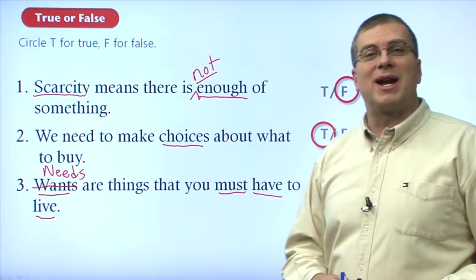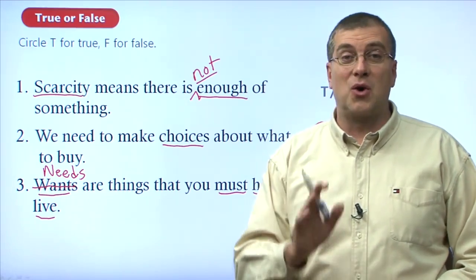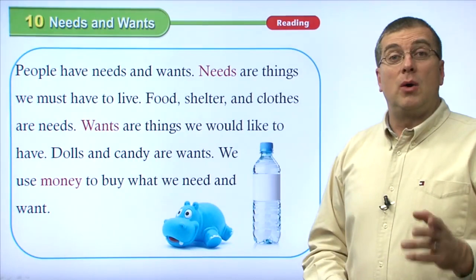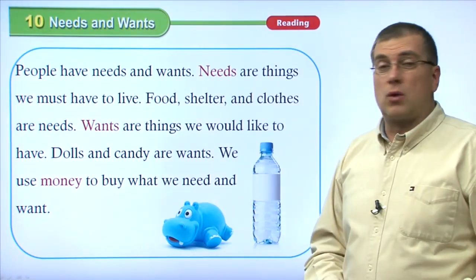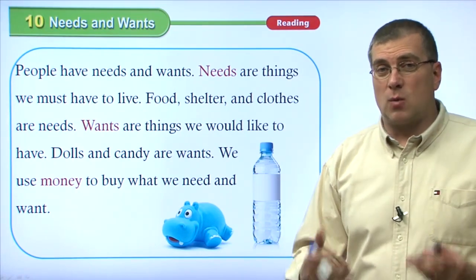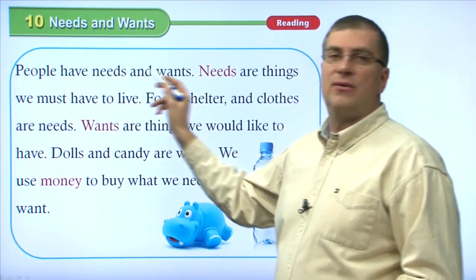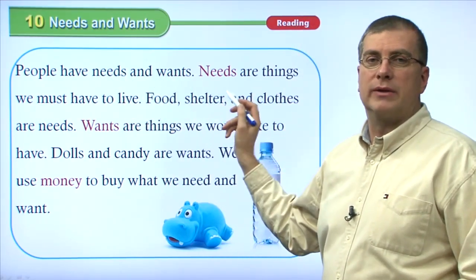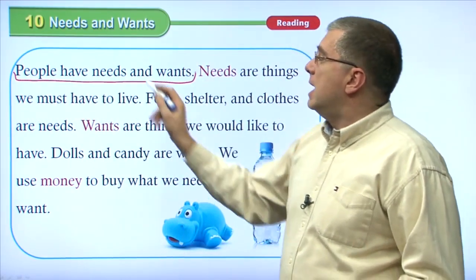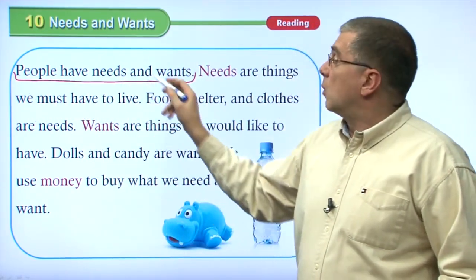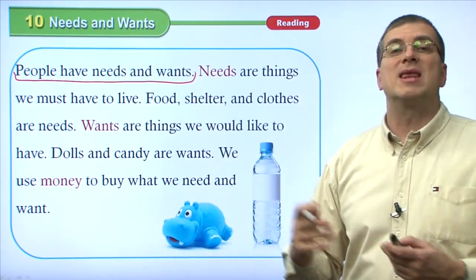Let's take a short break here and come back to look at the reading passage. Welcome back. Let's go over the reading passage together. In this reading passage, of course, we're talking about needs and wants — we can see that right away in our first sentence: 'People have needs and wants.' That's our topic sentence. In this passage, we're going to talk about needs and wants and also about how we get those things.